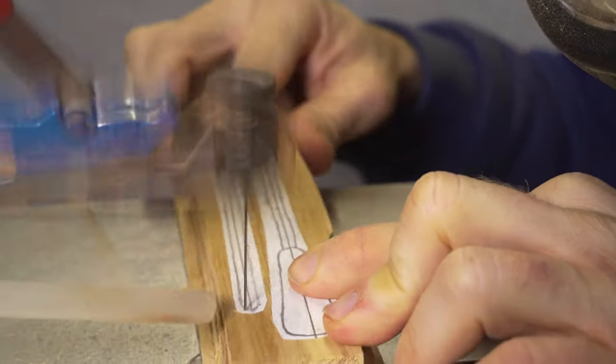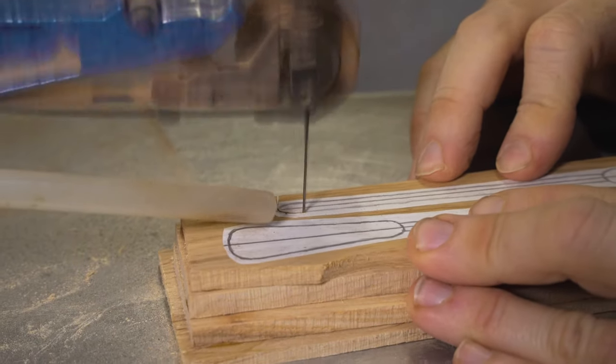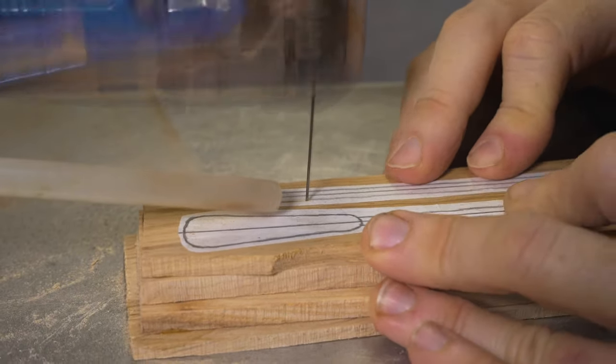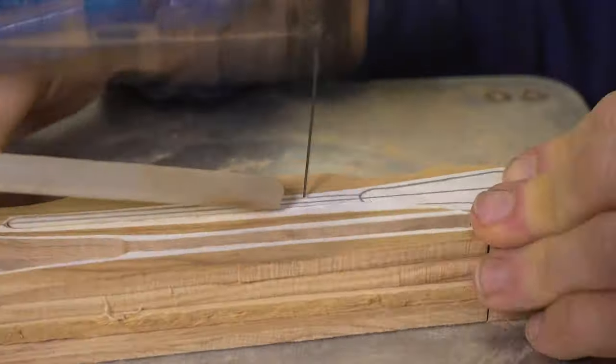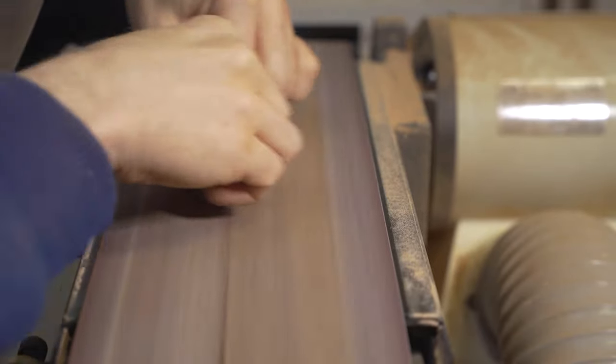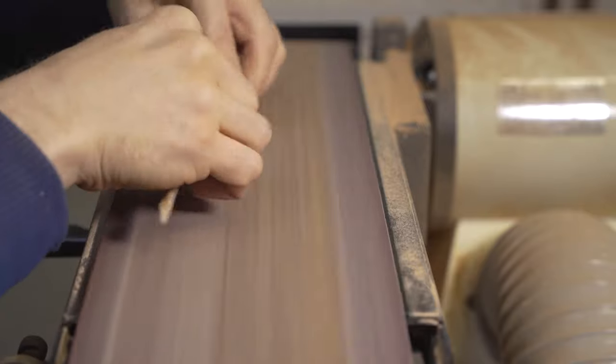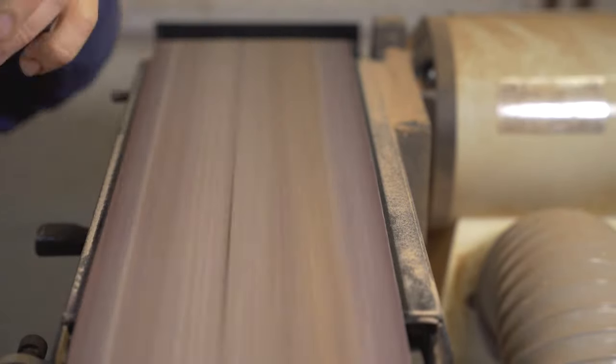Back across to the scroll saw and we're using this to cut out four oars at the same time. So we've stack cut four thin pieces of lighter coloured woods. We use the belt sander to further shape and refine the oars so they will fit through the holes that we've cut out for the sides of the longboats.